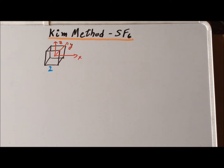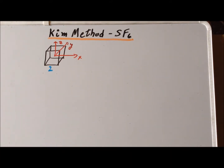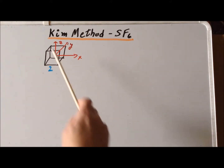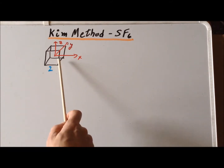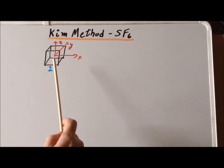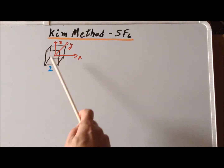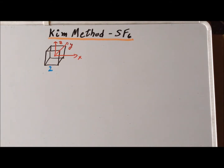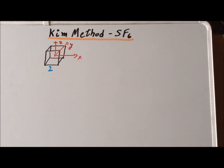The first step in the Kim method is to draw a diagram of the problem. Since the octahedron is a cubic group, we first set up a cube with edge length of 2. We also arrange the axes so that the x-axis is going left to right, the z-axis is going up, the positive y-axis is going back into the board, and the origin is at the center of the cube.